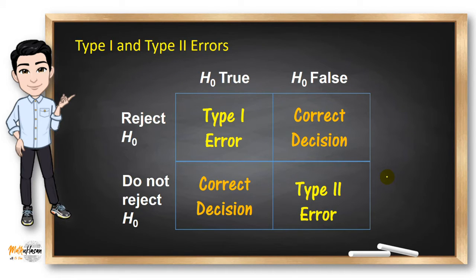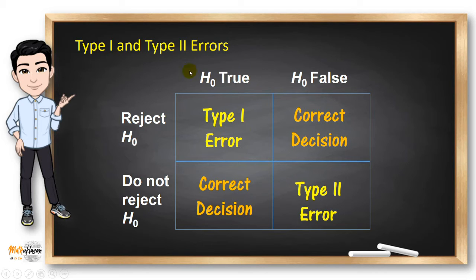In reality, the null hypothesis may or may not be true, and a decision is made to reject or not to reject it on the basis of the data obtained from a sample. There are four possible outcomes for this situation. Notice that in this matrix, there are two possibilities for correct decisions and two possibilities for incorrect decisions. A type 1 error occurs if one rejects the null hypothesis when it is true, and a type 2 error occurs if one does not reject the null hypothesis when it is false.